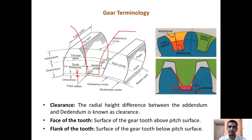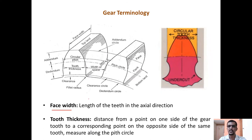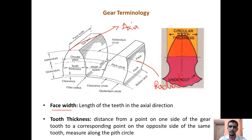The next definition is the face of the tooth — the surface of the gear tooth above the pitch surface. The surface below the pitch surface is called the flank of the teeth. Face width is the length of the teeth in the axial direction — along the radial direction we have the diameter, and perpendicular to that is the axial direction, so the length of the teeth in the axial direction is the face width.